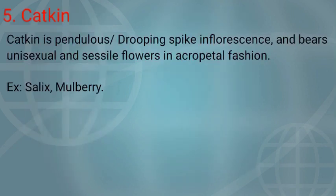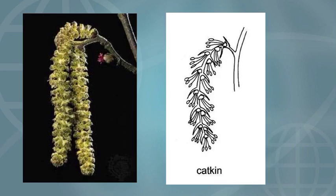The fifth one is catkin inflorescence. Catkin inflorescence is a pendulous or drooping spike inflorescence and bears unisexual and sessile flowers in acropetal fashion. Examples: Mulberry and Salix plant. In the diagrammatic representation of catkin inflorescence in Mulberry, the inflorescence axis is very weak and it is hanging or drooping.